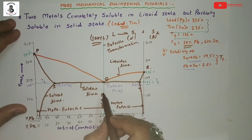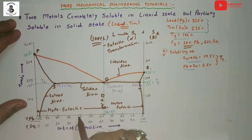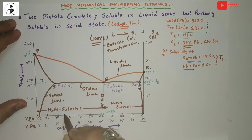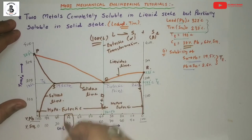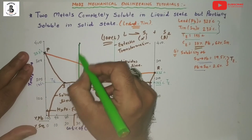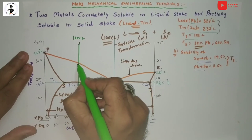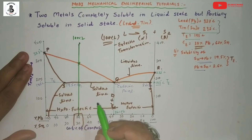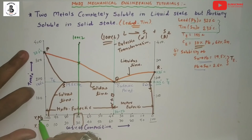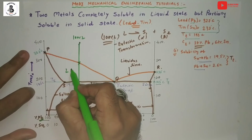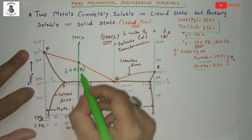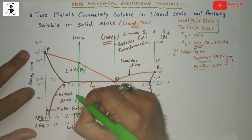For hypoeutectic transformation, take a point at around 70% Pb and 30% Sn and draw a vertical line. Just above the liquidus line it is 100% liquid. Once it touches the liquidus line, solidification begins — this is the hypoeutectic region with majority lead. So in this region it is liquid plus Pb, related to the alpha phase of Pb, and after this it becomes alpha plus beta.